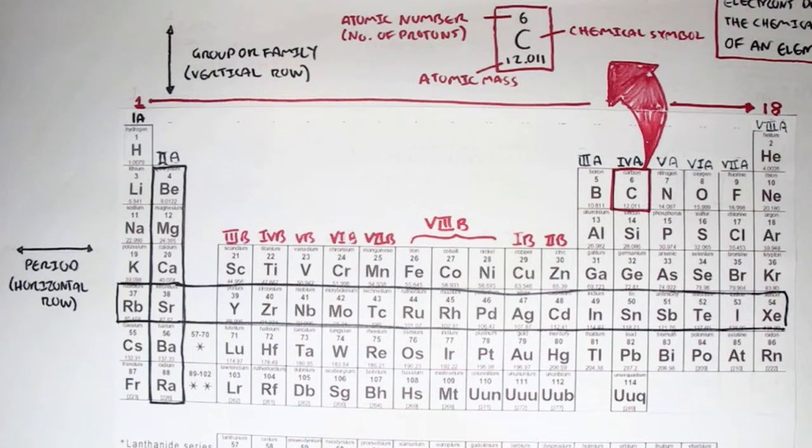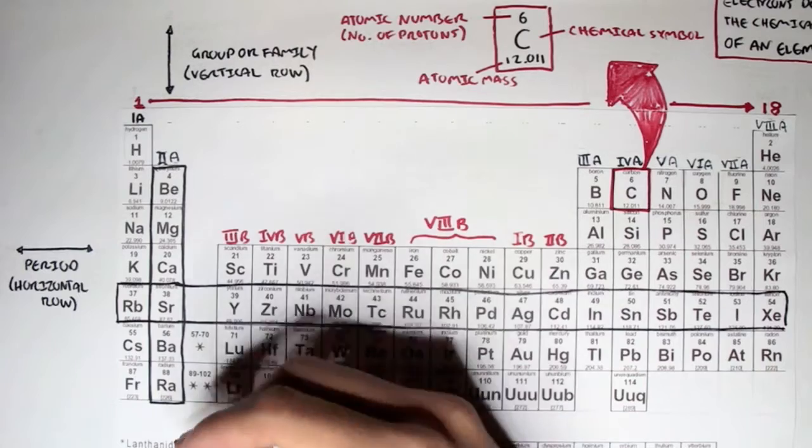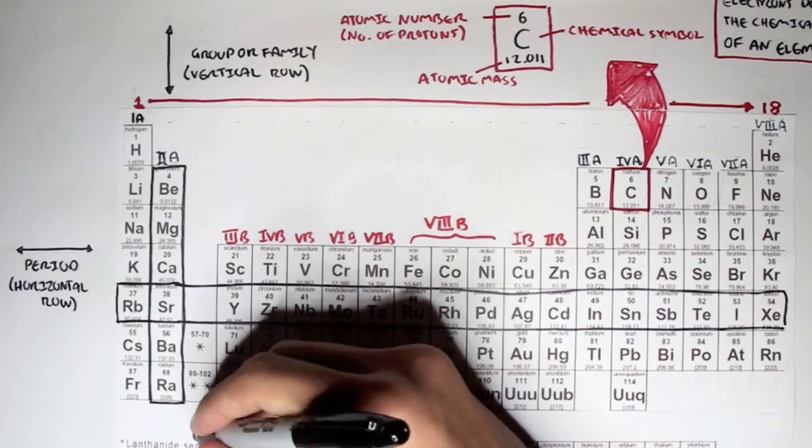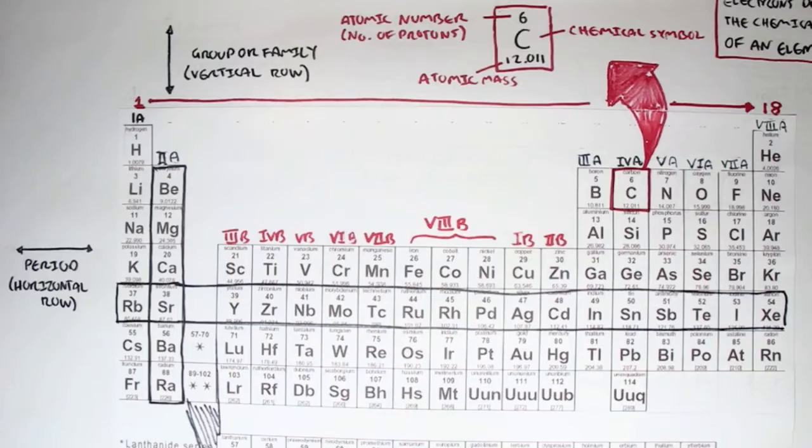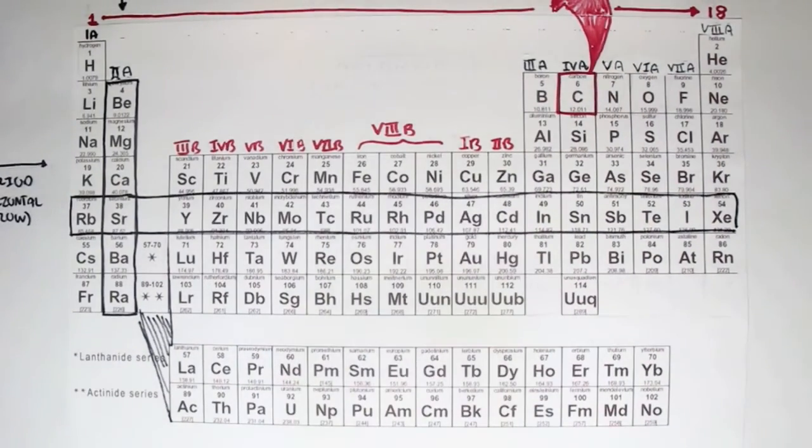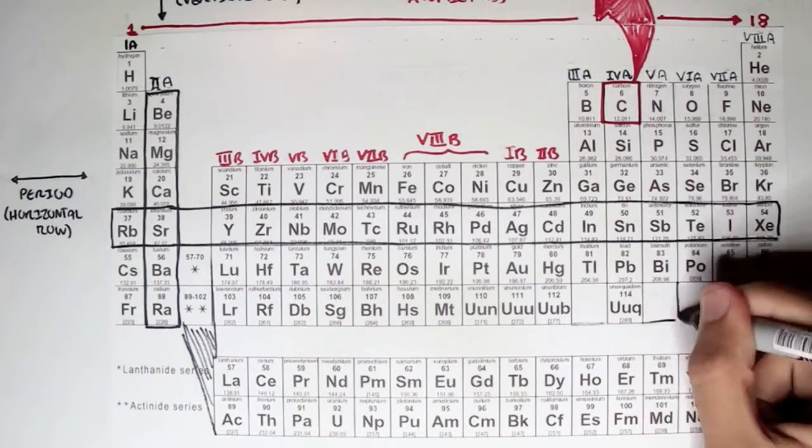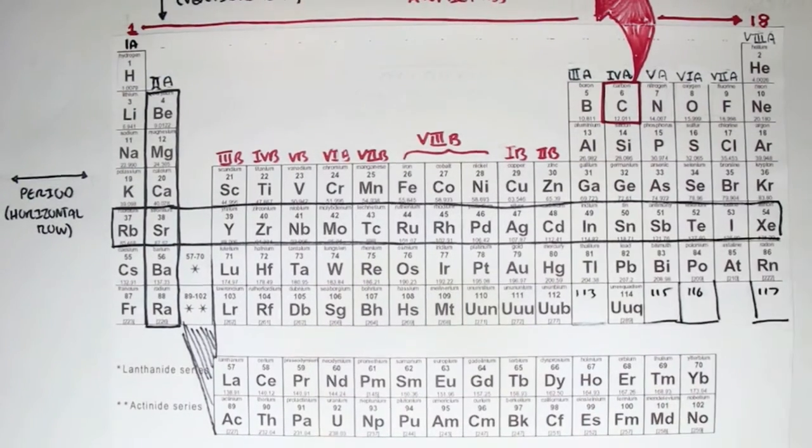These bottom elements here are known as the Lanthanide series and the Actinide series. We won't really talk about them in this chemistry revision, but essentially, they fit into this region here.